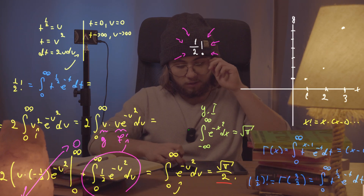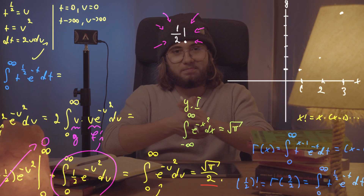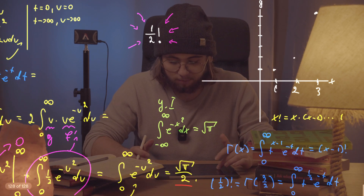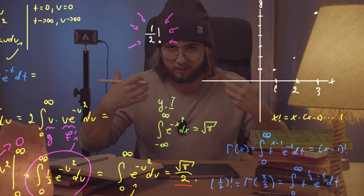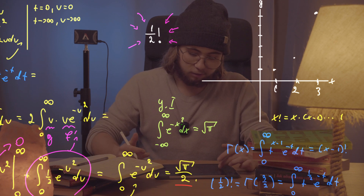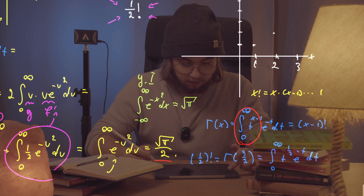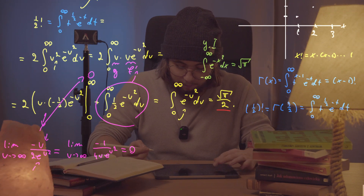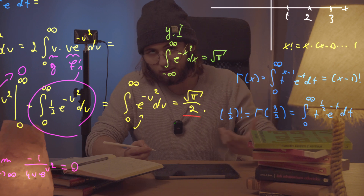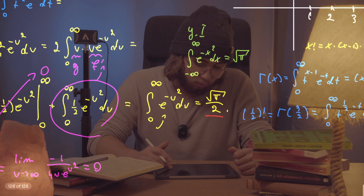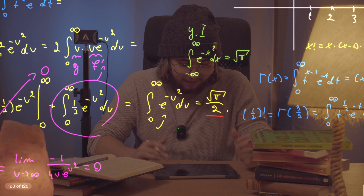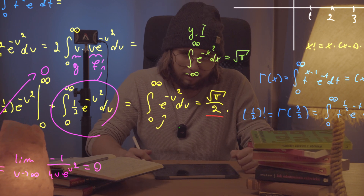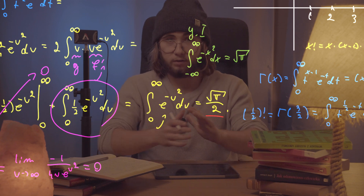So what did we do here? First, we noticed we can't evaluate one-half factorial directly because factorial only takes integers. That's why we introduced the gamma function and evaluated it at x equal to three over two. What we got is that the factorial of one over two equals one half of the Gaussian integral, which is the square root of pi over two.